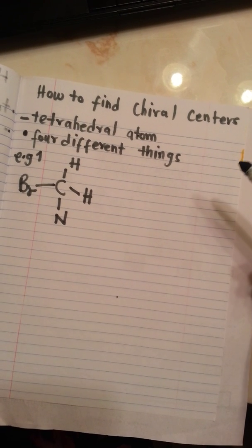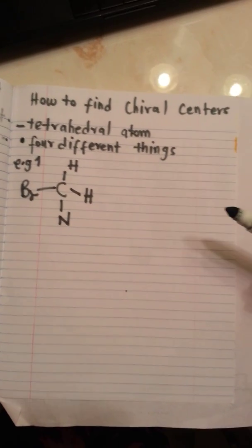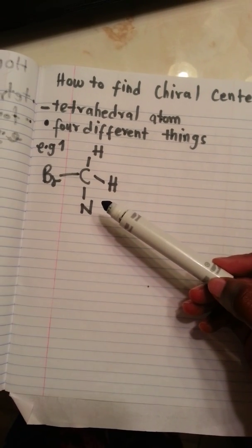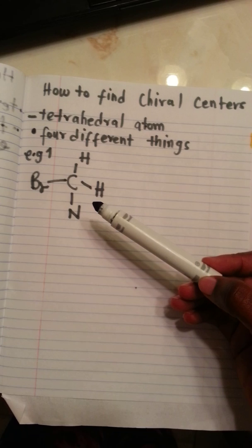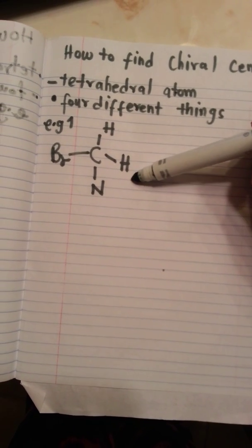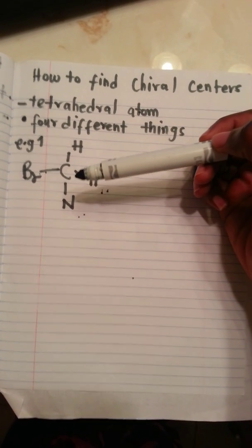Yes, four different things. So let's see this molecule right here. Is this a chiral center? No, it is not. We see that we have two hydrogens over here, a bromine, and a nitrogen this way.